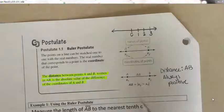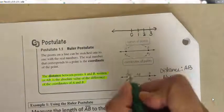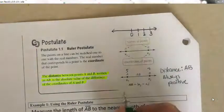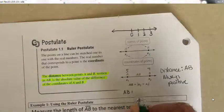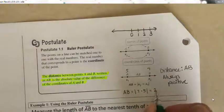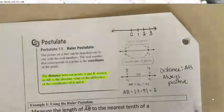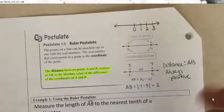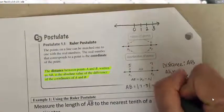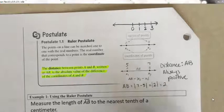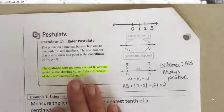For example, if one point is at 5 and the other at 7, then AB equals the absolute value of 7 minus 5, which is the absolute value of 2, which equals 2. Seven minus five is two, and absolute value always means distance on a number line, so it's always positive. Pretty simple and straightforward.